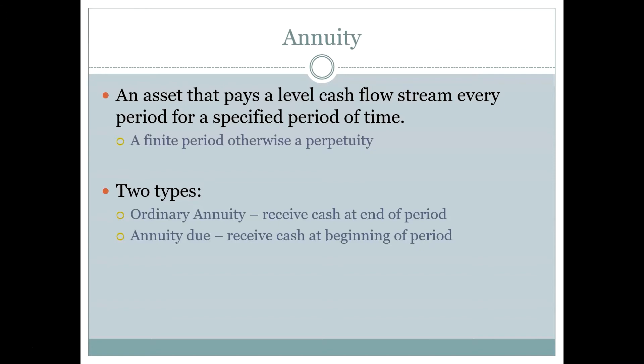There are two types of annuities, which are common financial instruments. The first is called an ordinary annuity and the second is called an annuity due. The thing that distinguishes these two types is when you receive the cash flow. In an ordinary annuity — which is the most common — the cash flow is received at the end of the period, for the service you've already received.